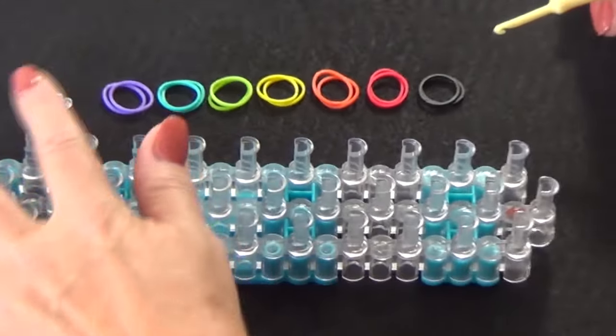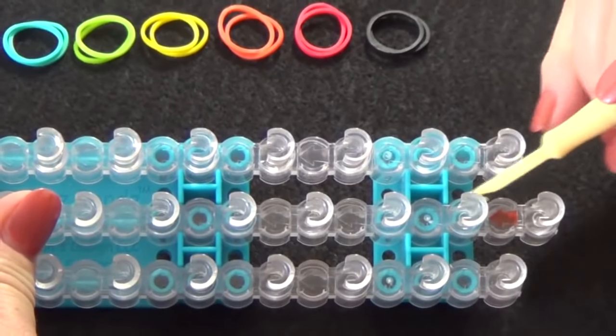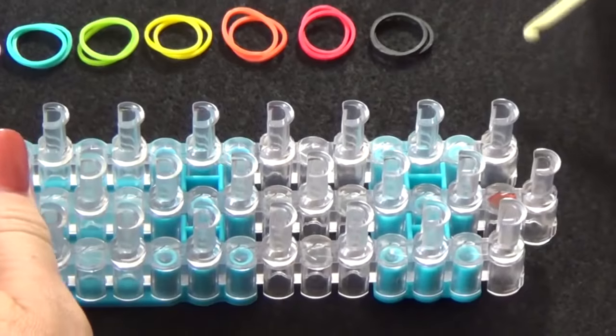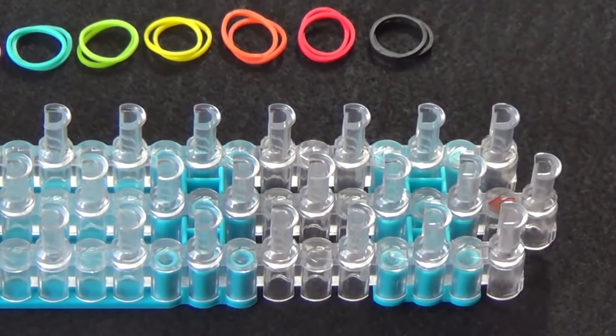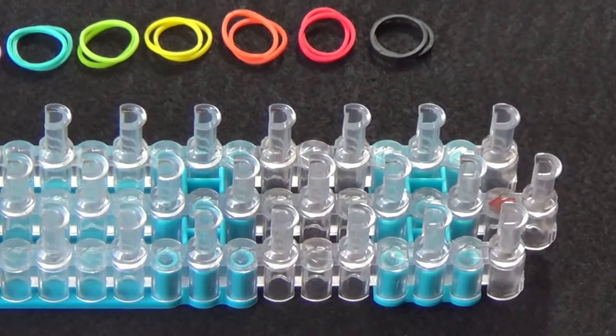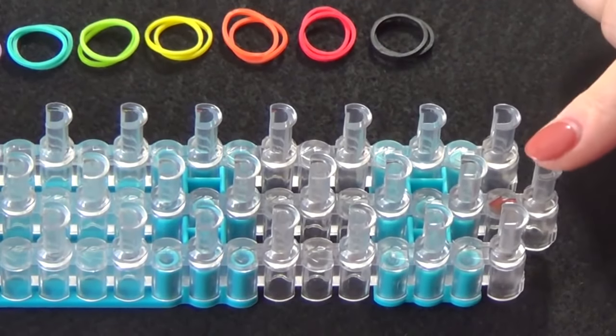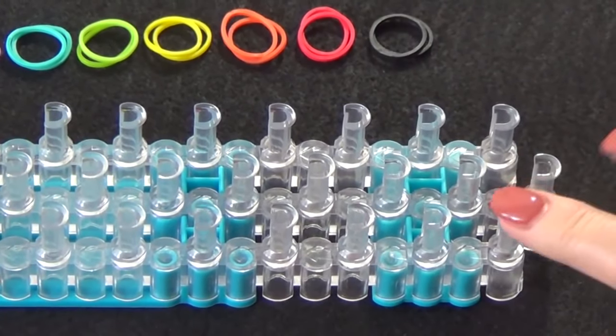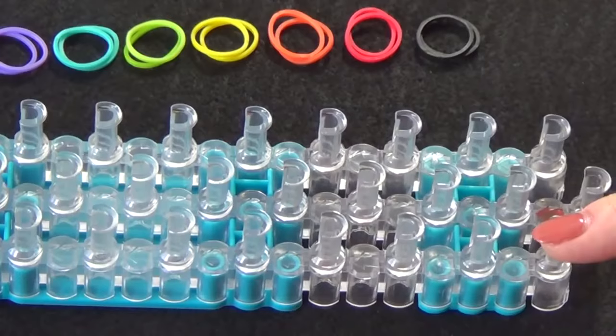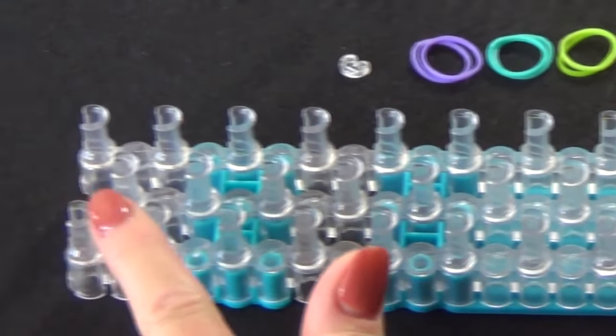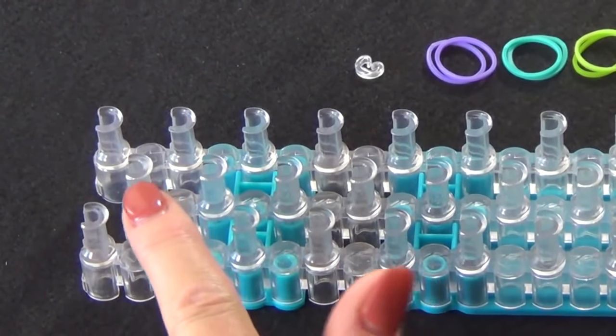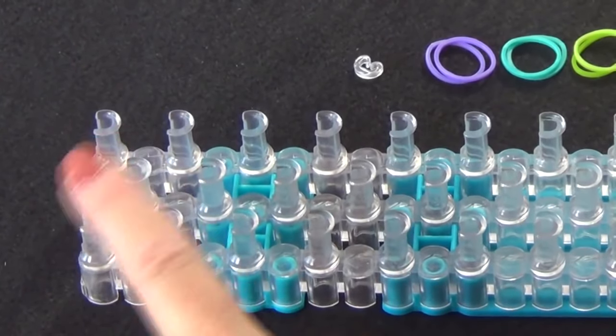Place your loom with the red arrow pointing away from you. The first step in making this bracelet is placing the black bands around the perimeter of the loom. We'll start from the center point, move to this outside point, go up this side of the loom until we reach the second pin from the end, and from here we'll place the band to the center pin.